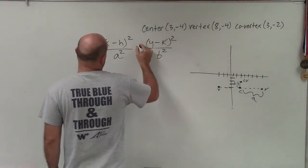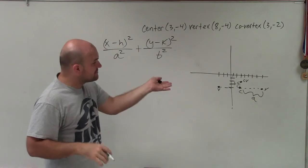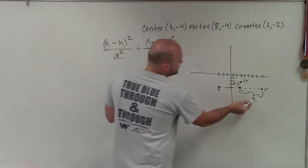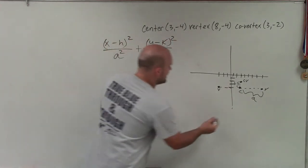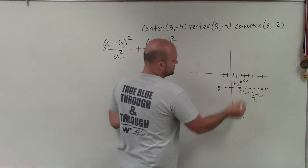Now we just need to determine our information. Fortunately, since they gave us the co-vertex and the vertex, we actually know what a and b are. We said a is 5, and b is 2.